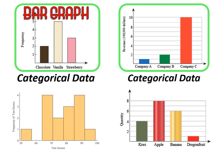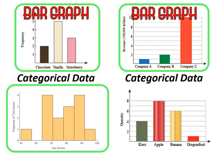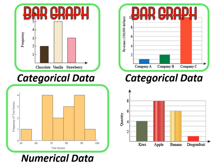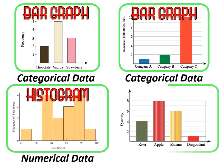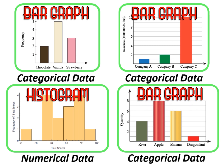Different types of ice cream flavors is a bar graph because it is categorical data. This next graph is also categorical data and it is a bar graph. This graph shows test scores — numerical data — so it is a histogram.